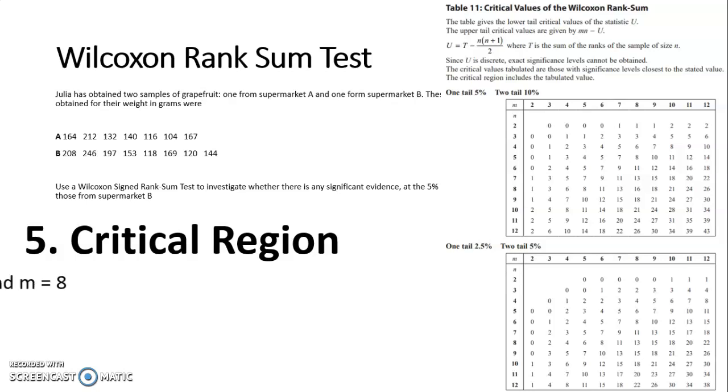So to find the critical region, we need to know the values of N and M. And this is how many numbers there are in each of the two samples. The order of these does not matter. It does not matter which one you call N and M. So I have seven grapefruits from supermarket A and eight grapefruits from supermarket B, which is why I have seven and eight written down. This is a one-tailed 5% test. So I am going to be using the top table from table 11. And I am going to go across from seven and down eight. If you go across eight and down seven, it will give you the same critical value, which is 13. And therefore, my critical region is anything less than or equal to 13.